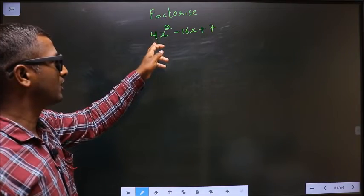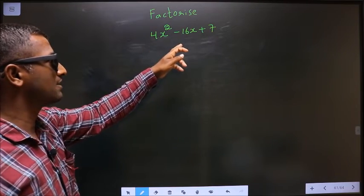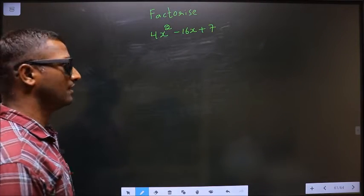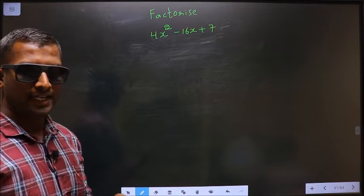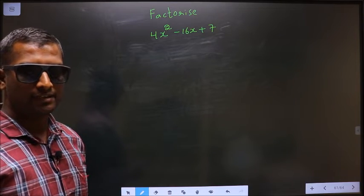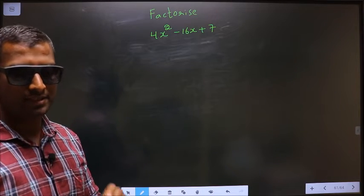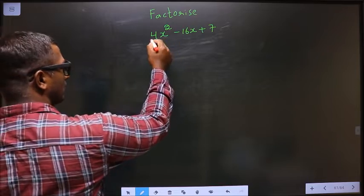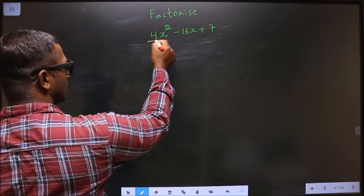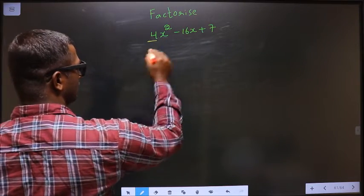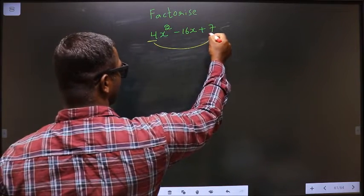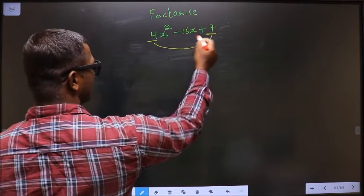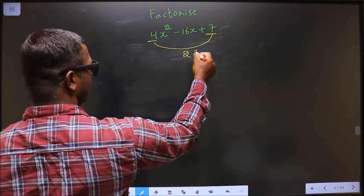Factorize 4x squared minus 16x plus 7. To factorize any quadratic equation, step 1: the x squared coefficient, which is 4 here, should be multiplied by the constant, which is 7. So 4 into 7 is 28.